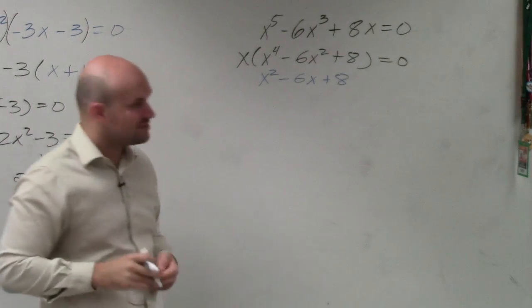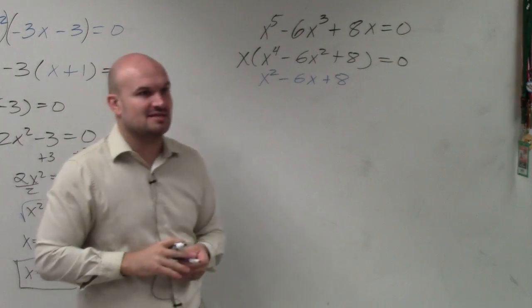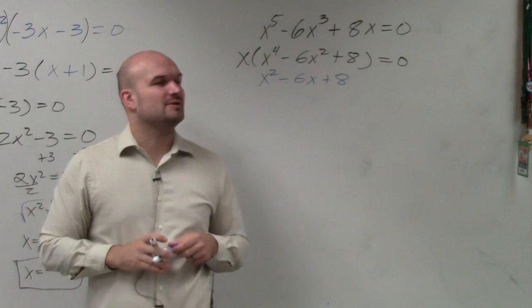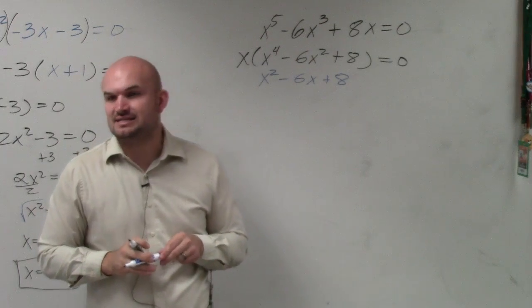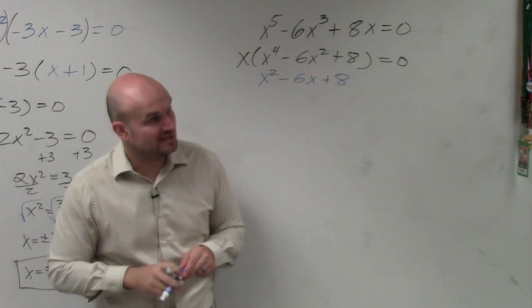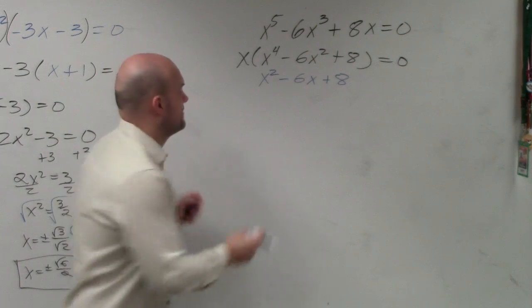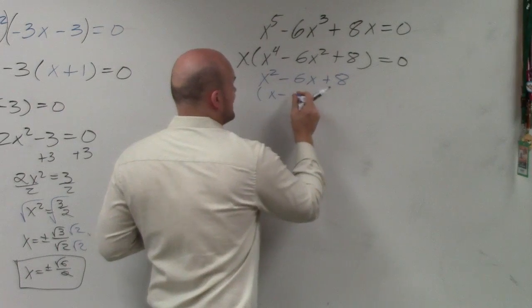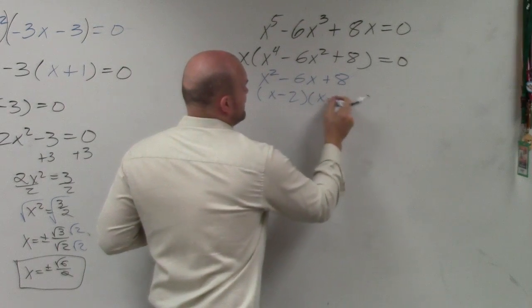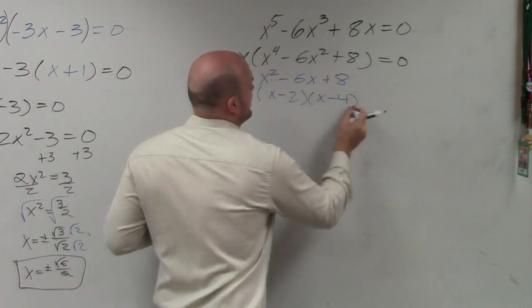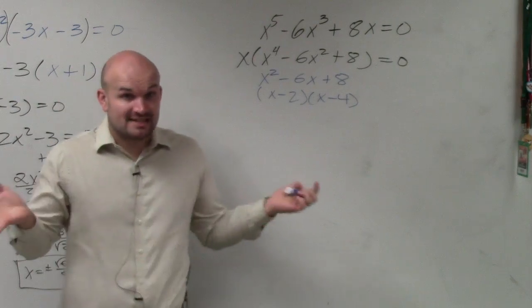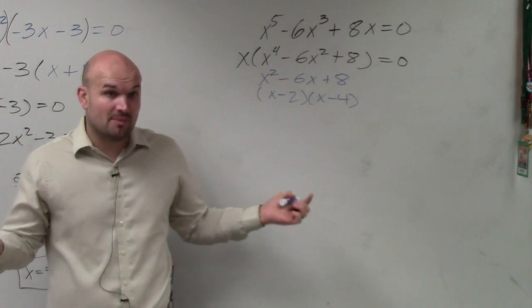Can we factor x squared minus 6x plus 8? What two numbers multiply to give you 8 and add to give you negative 6? Negative 2 and negative 4. So we have x minus 2 and x minus 4. Would everybody agree that that works? So that's our factored form.